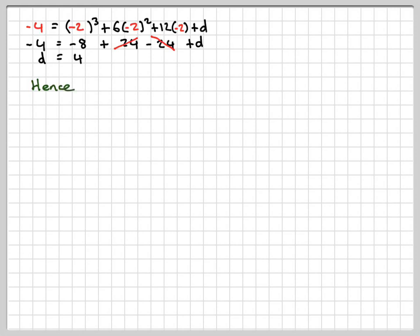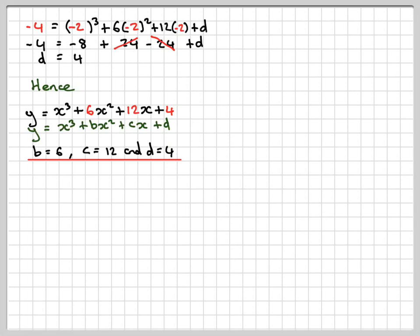Hence, y is x cubed plus 6x squared plus 12x plus 4. That's now in the format x cubed plus bx squared plus cx plus d. So b is 6, c is 12, and d is 4.